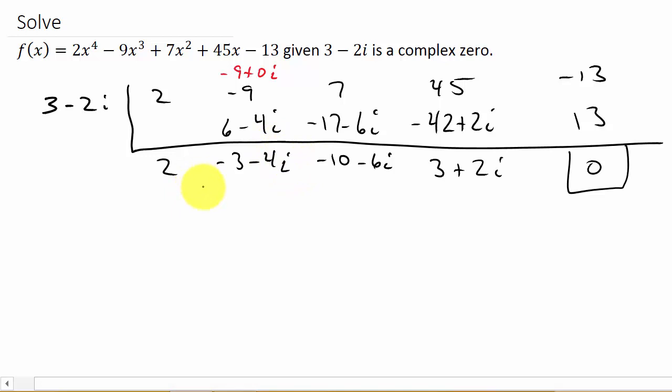So now we need to do the synthetic division on this. So there's our 2, negative 3 minus 4i, negative 10 minus 6i, and 3 plus 2i. And I'm going to do synthetic division on that. Well, what are we going to divide with? Well, 3 plus 2i. Because if they are telling me that 3 minus 2i is a solution, then I know 3 plus 2i is also a solution.